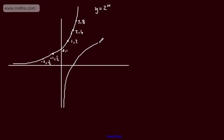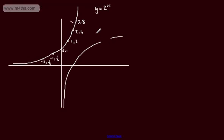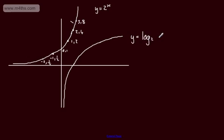The inverse gives us a reflection in the line Y equals X. This graph is Y equals log to the base 2 of X. The point (0, 1) on the exponential maps to (1, 0) on the log curve. Log to the base 2 of 1 equals 0 — what power is 2 raised by to get 1? Zero. In the same way, 2 to the 0 equals 1. We can see these are inverse functions.